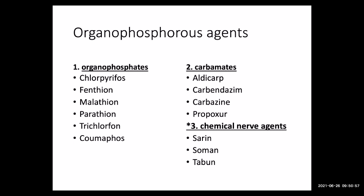Organophosphorus agents include organophosphates such as chlorpyrifos, fenthion, malathion, parathion, trichlorfon, and coumaphos — all available in Kenya under different trade names, widely used in the agricultural sector. Carbamates include aldicarb, carbendazim, carbofuran, and propoxur. Chemical nerve agents are also part of this class but we won't dwell on them. Kenya is primarily an agricultural nation, so people attempting self-harm frequently use organophosphates — it is a very common presentation.